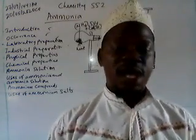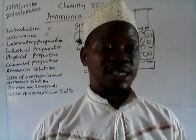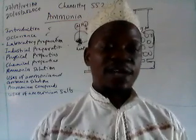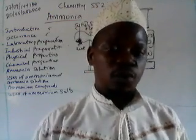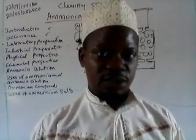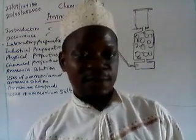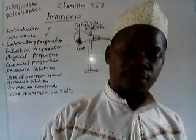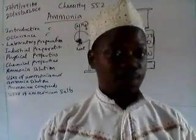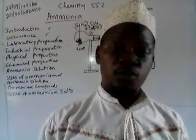Introduction. Ammonia is usually found as an impurity in the atmosphere. It is made up of one nitrogen atom covalently joined to three hydrogen atoms. And since nitrogen is highly electronegative compared to hydrogen, the compound, even though it is covalent, is polar.